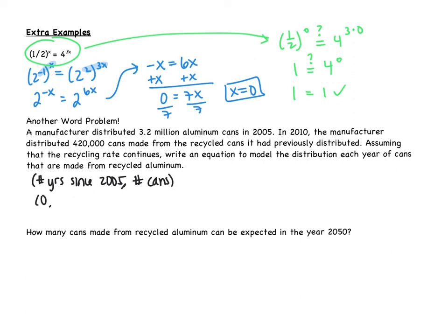So since we first started. And then the number of cans. So in 2005, zero years have passed. And then there's 3.2 million. 2010, five years later, there's 420,000 cans. So now we're ready to write our model. So we get y = a·b^x. We've talked about you're always going to start with the point that has a zero in it. And that helps explain why I'm using years since 2005. So I get that 3.2 million is equal to a·b^0. So our a is that 3.2 million.